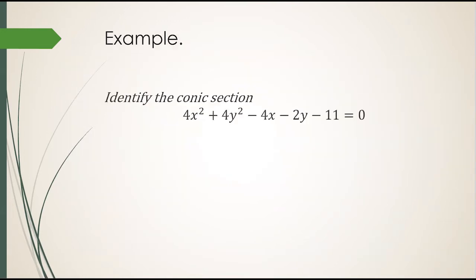Let's go back to the previous example. Identify this conic section: 4x squared plus 4y squared minus 4x minus 2y minus 11 equals 0. It's not in standard form, so I can't just compare it with my table of standard forms, so I'm going to have to use the non-standard form method.